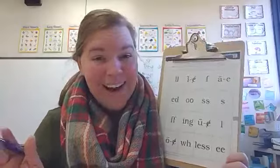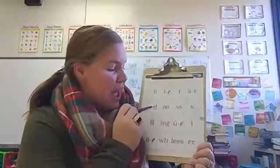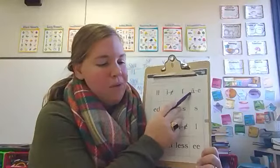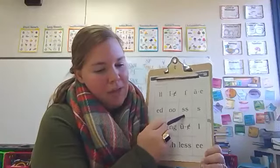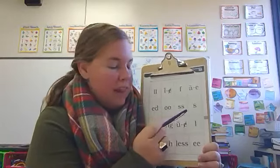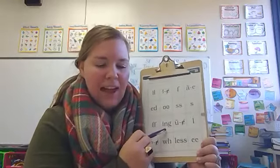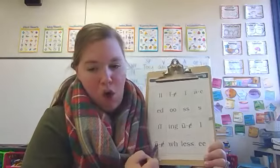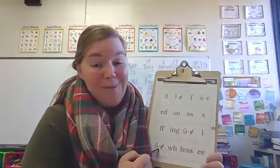Bingo! You should have a bingo now. So you should have done consonant-E from the vowel sound in the word lake. You should have the S-S from the spelling for the final sound in the word grass. Suffix I-N-G from the word starring. And O consonant-E for the vowel sound in rope. I hope that you got that bingo.